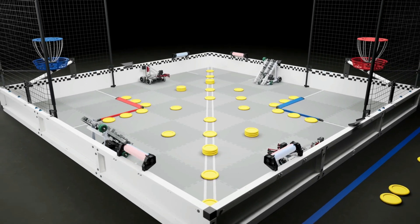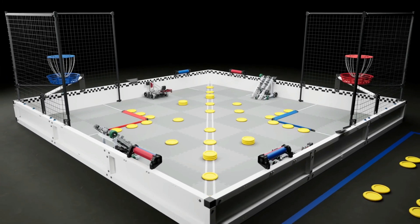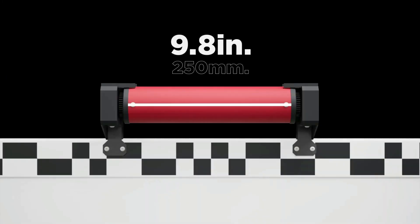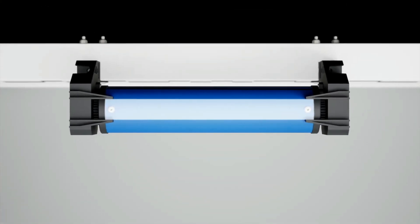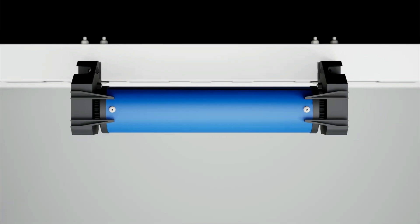In addition to launching discs, robots can also spin the four rollers mounted to the field perimeter. Rollers are 250mm long and 60mm in diameter. If the area inside of a roller's pointers only shows one color, then that roller is considered owned by that alliance. Each owned roller is worth 10 points.